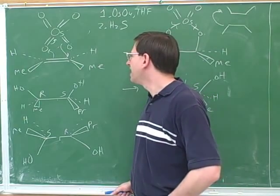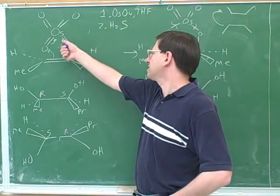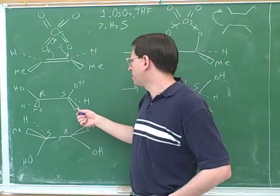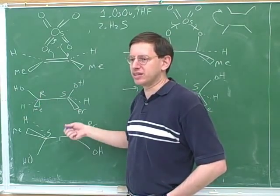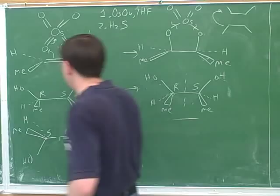On the other hand, if we had done a syn dihydroxylation with a propyl on one end and a methyl on the other, then we would get the two different products if they had started out cis to each other.